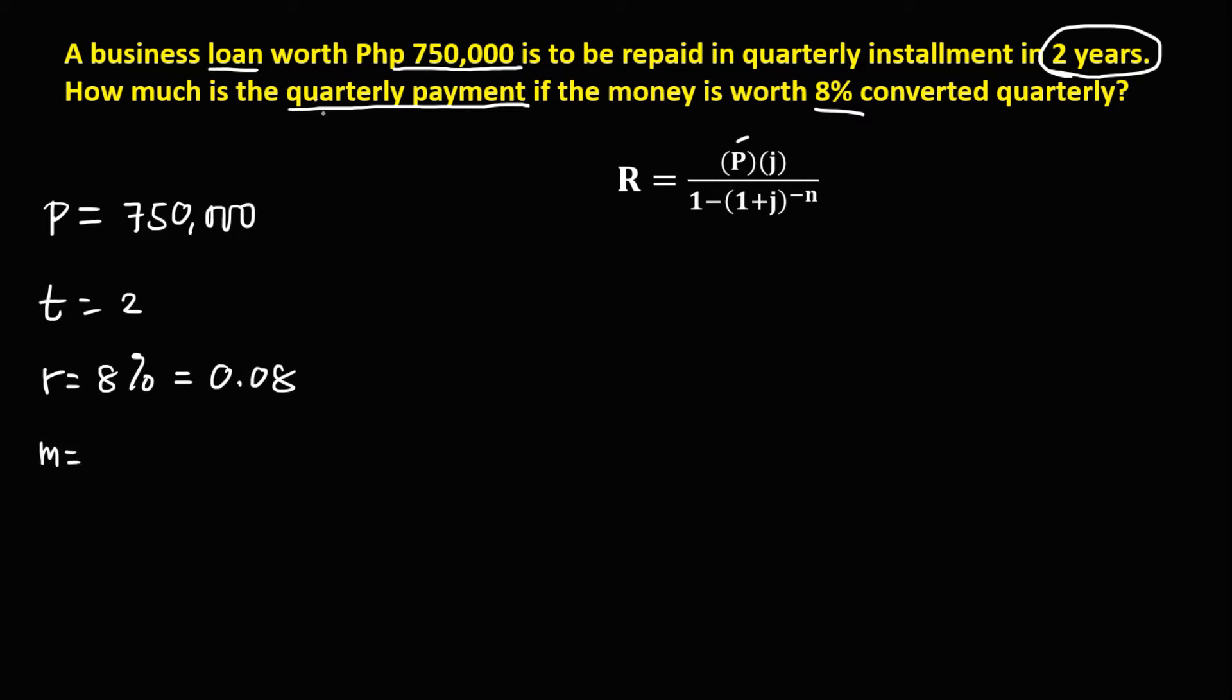Then for the periods of payment, since quarterly payment, therefore M is equal to 4. And for the interest per periods, that's R over M, so R is 0.08 over M, M is 4.